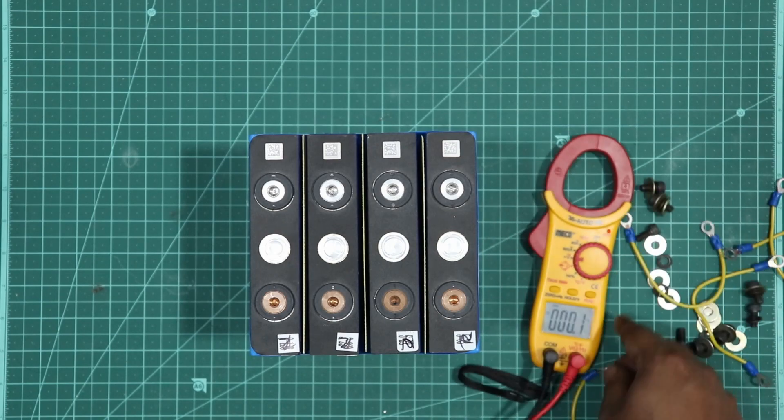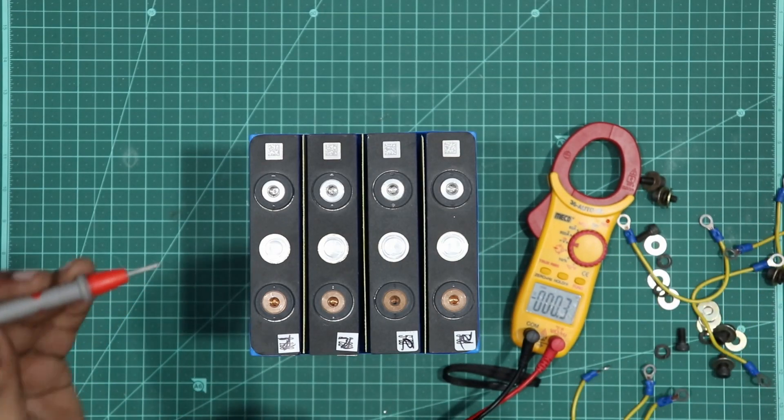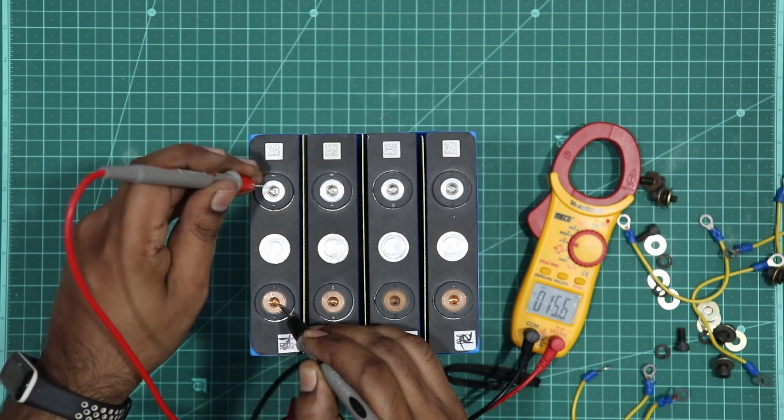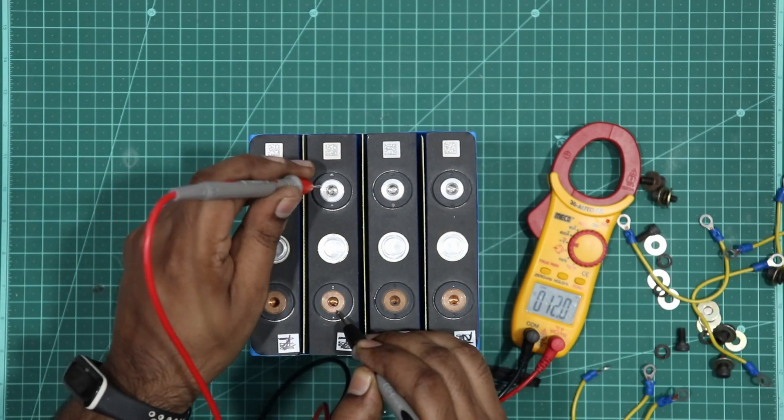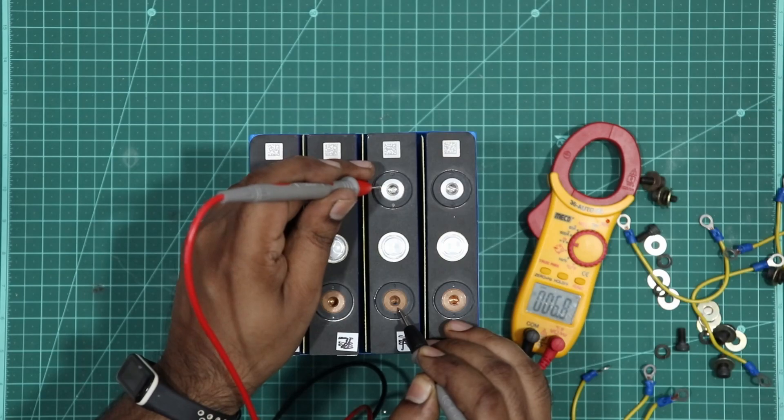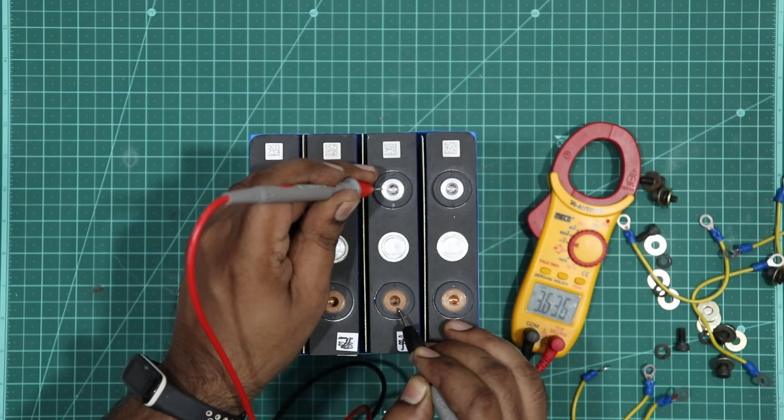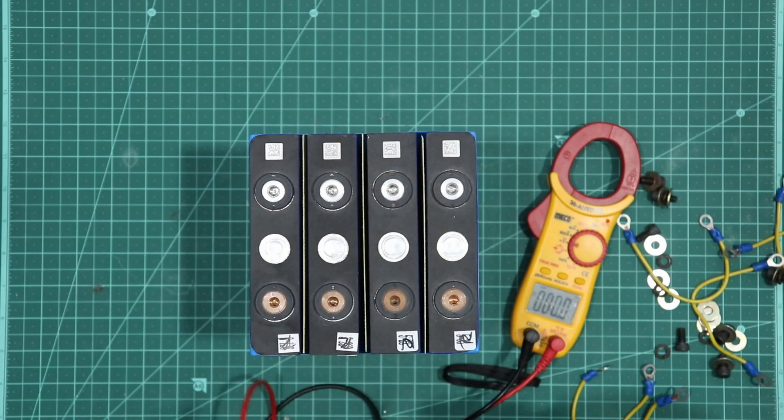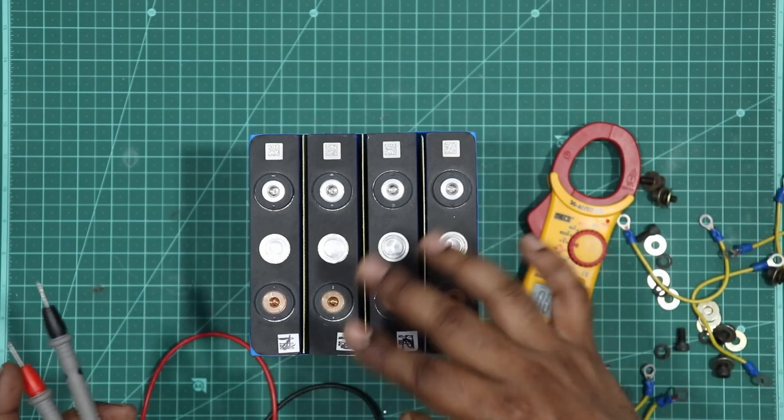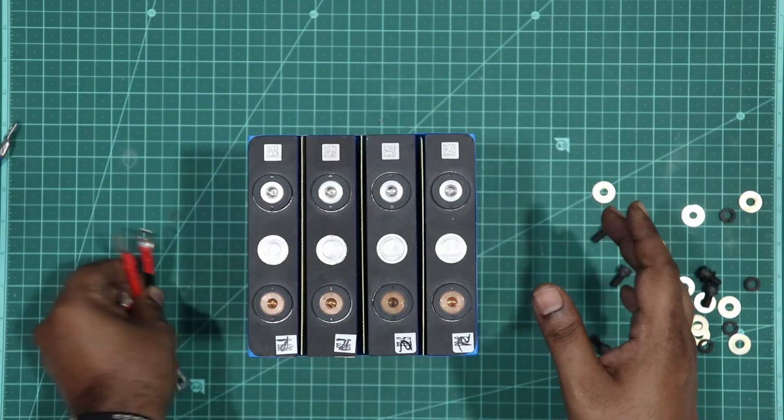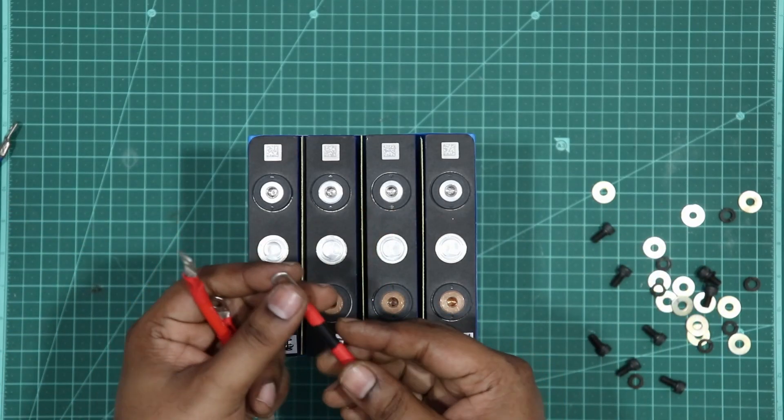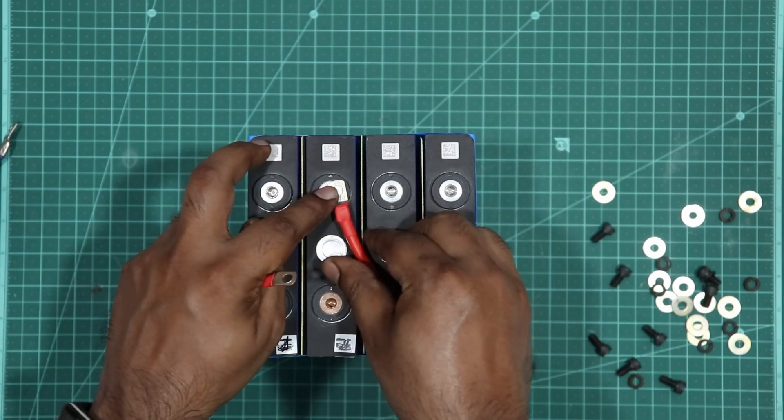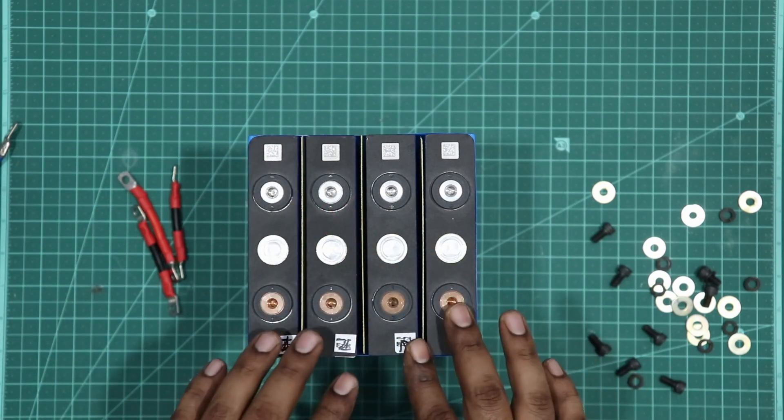Let me quickly show you the voltage of each cell. Since we just removed the cells from top balancing, all the cells should be at the same voltage: 3.63, 3.63, 3.63, 3.63, and 3.63. So the cells are top balanced now. We can go ahead and do series connections. These are the terminals I made using silicon wire and I'll be connecting all the cells diagonally.